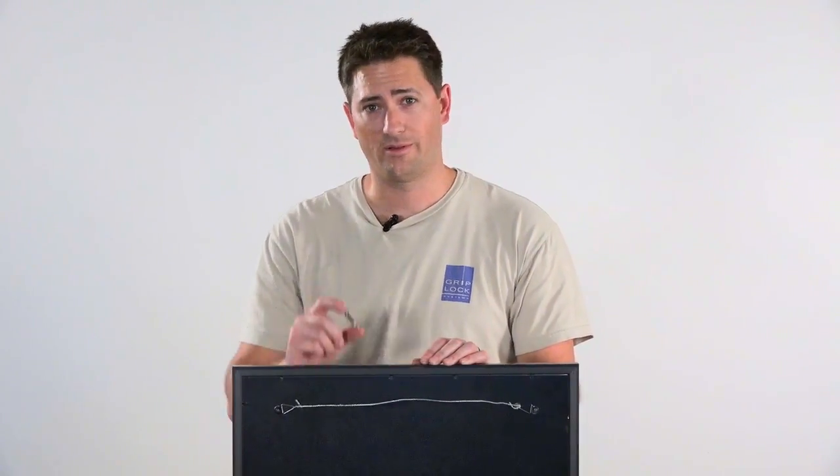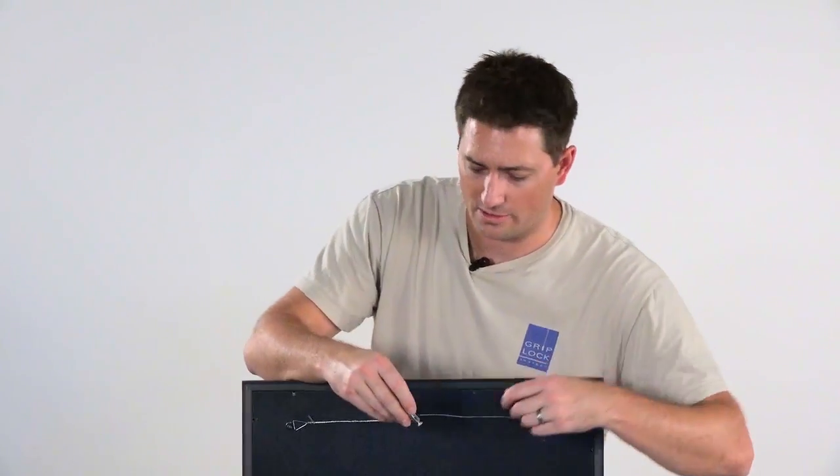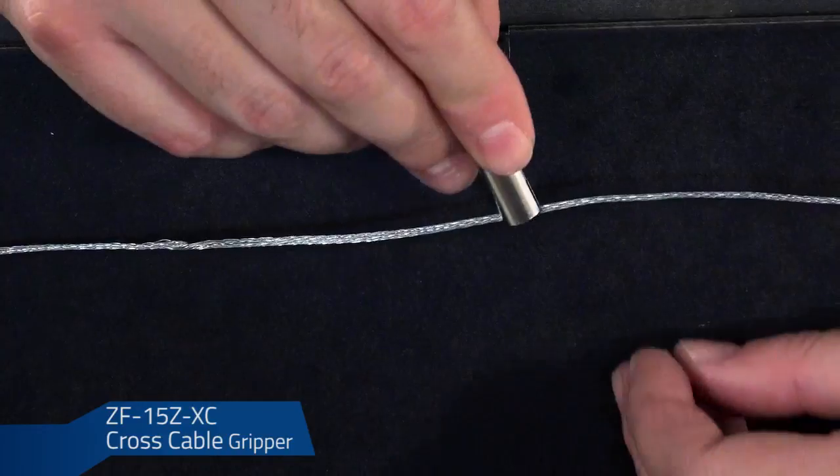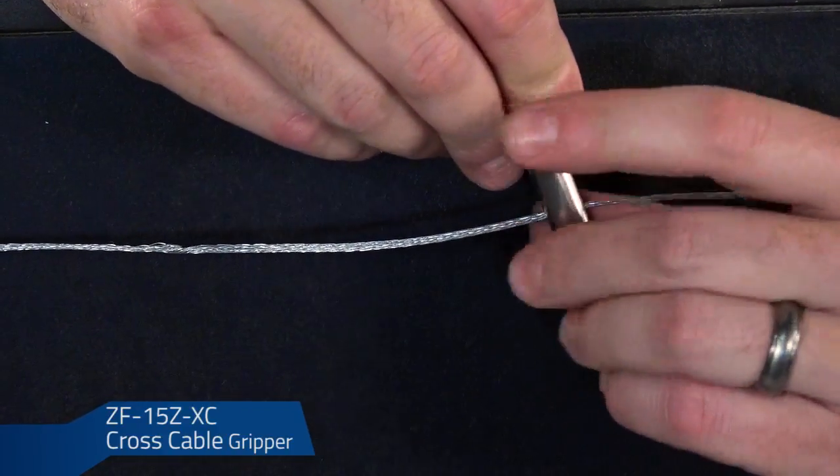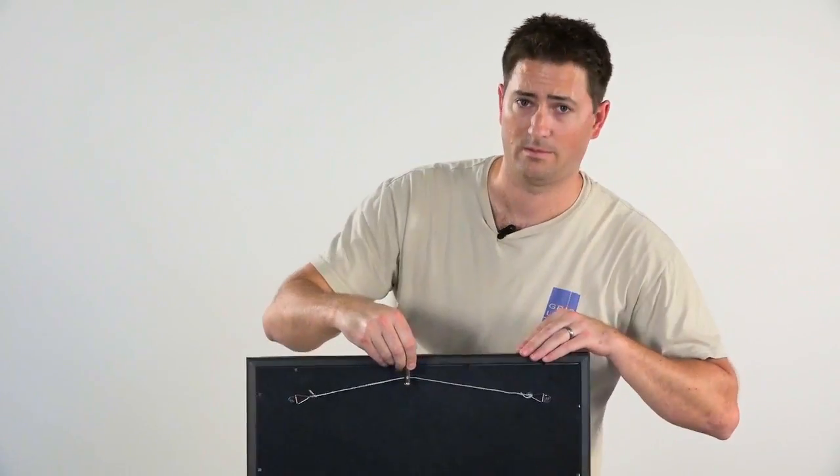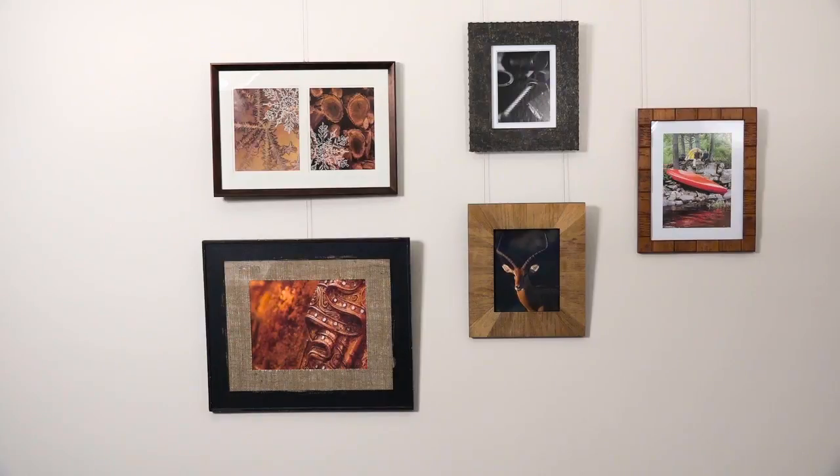How about hanging a picture with just one cable? The cross cable gripper can do just that. The cross cable gripper is used on frames with picture wire. You have to find the balance point, but with the cross cable gripper, it's easy to do. And of course, you can add multiple pictures below it on the same cable.